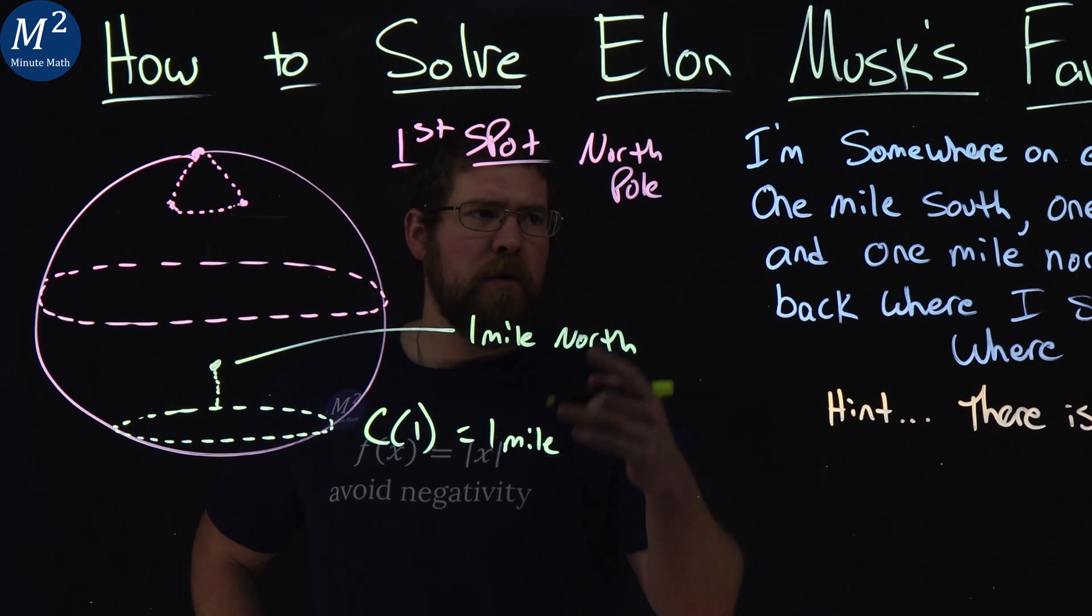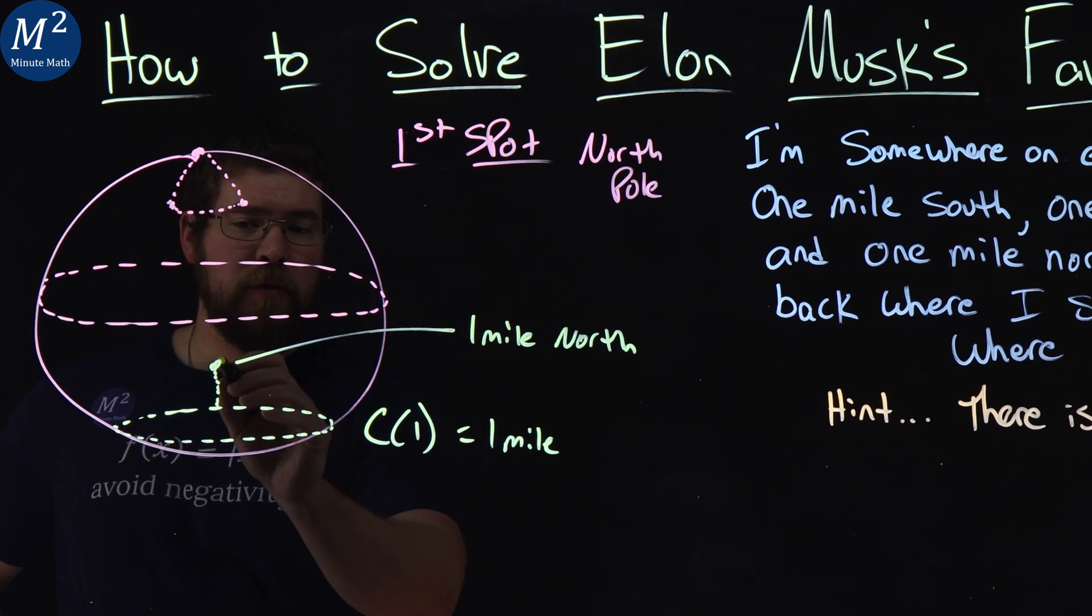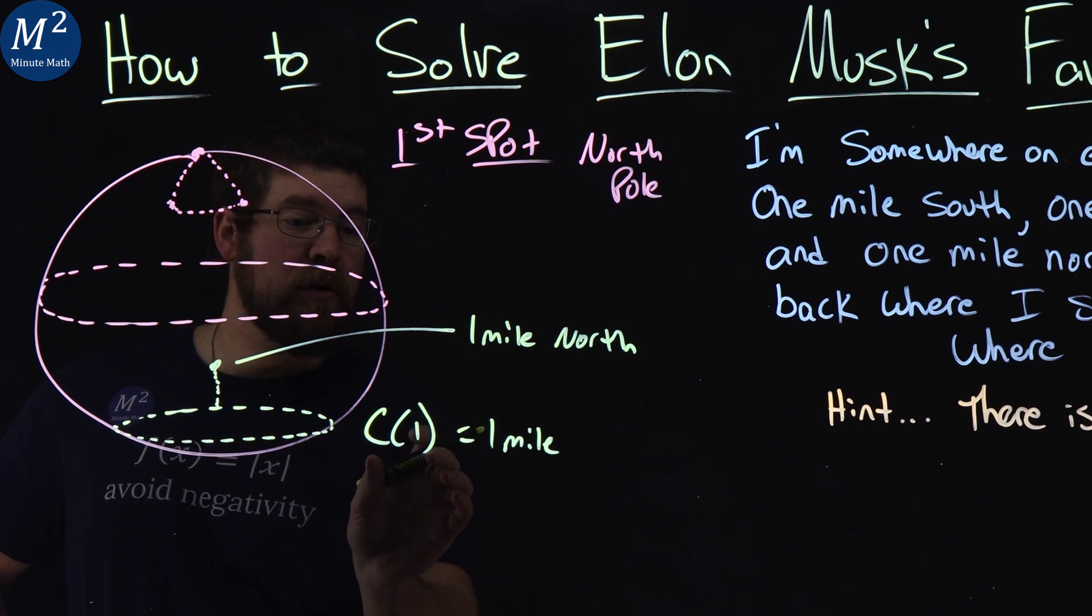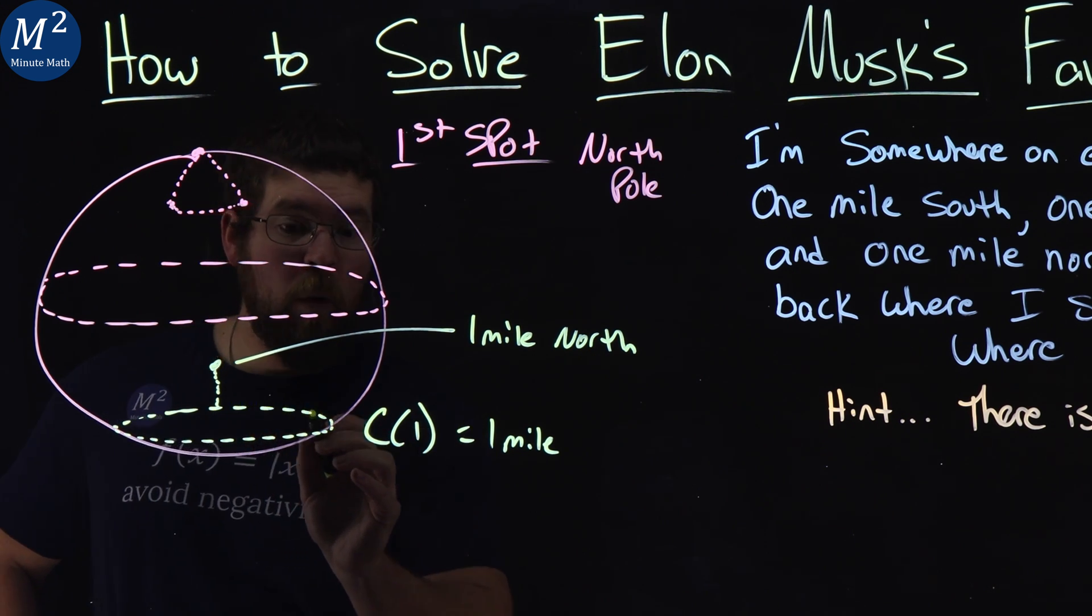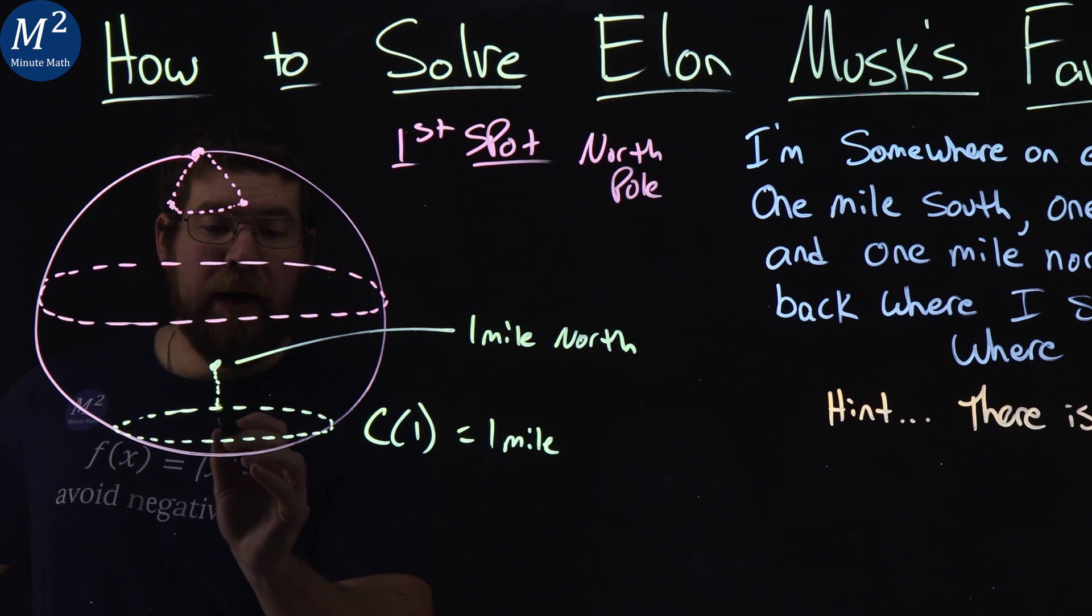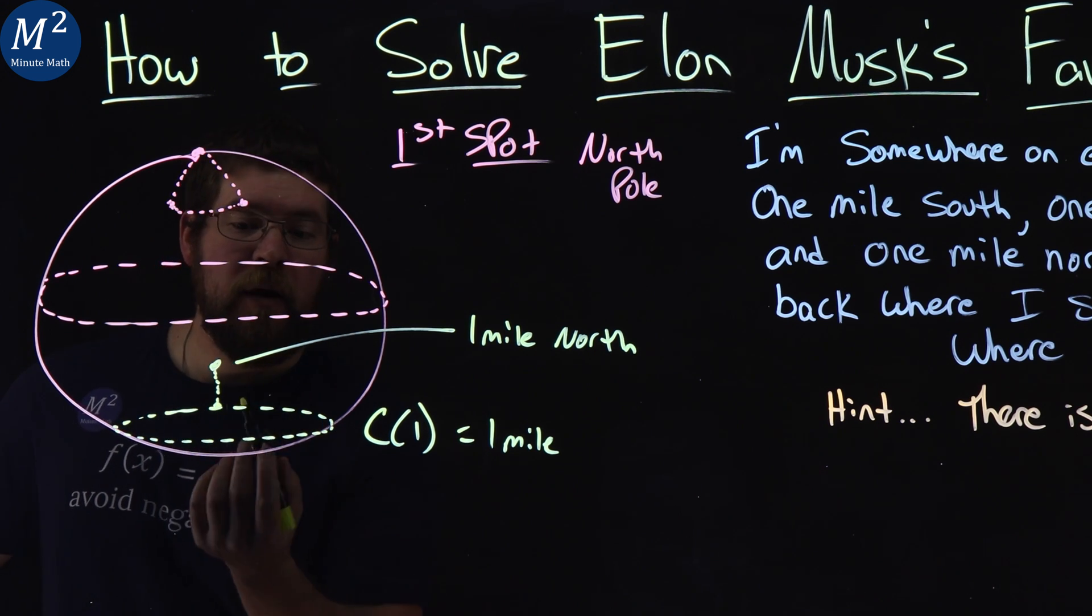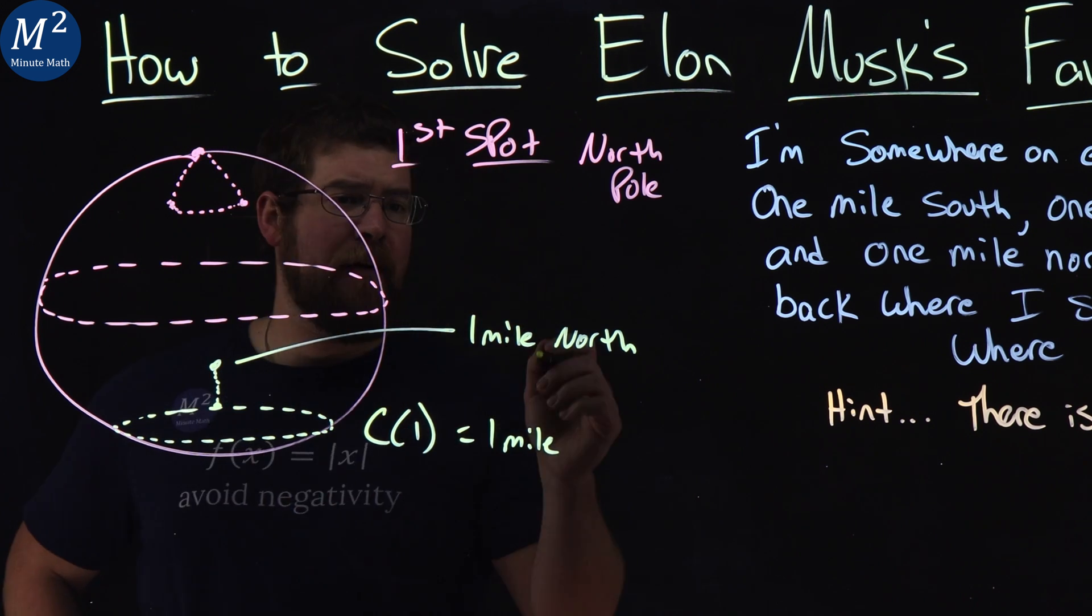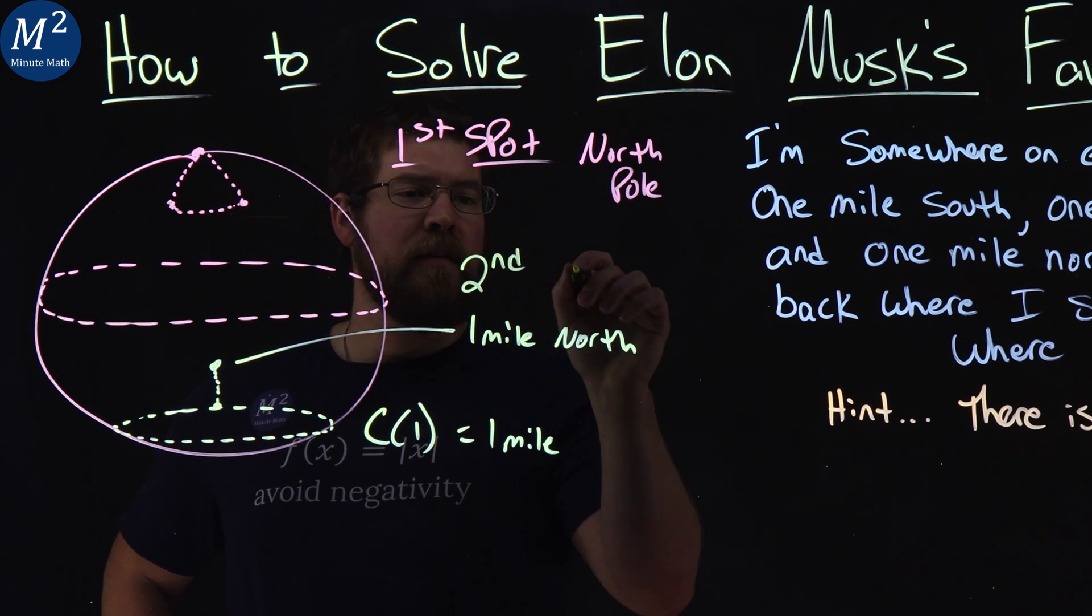Well, we start here. We go one mile south. We travel one mile south from this circle here. Then we travel one mile west. So we're traveling west, going around. But since this circumference is exactly one mile, we come back to our original spot. Then we go right back one mile north.